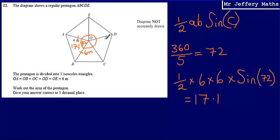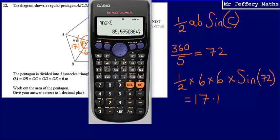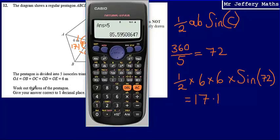I've got five of these triangles, so I'll take my answer and multiply it by 5. The area of the pentagon, correct to one decimal place, is the amount I worked out earlier multiplied by 5, which gives me 85.595.